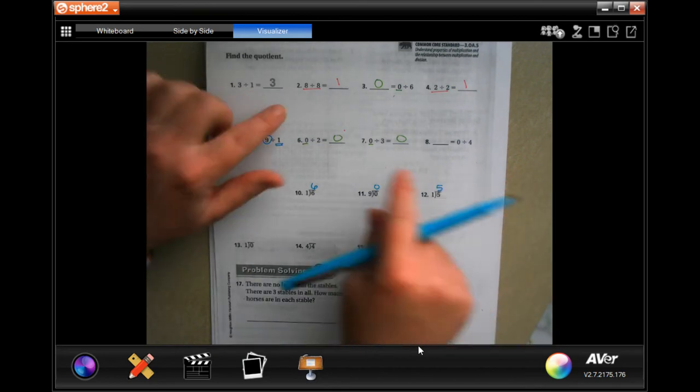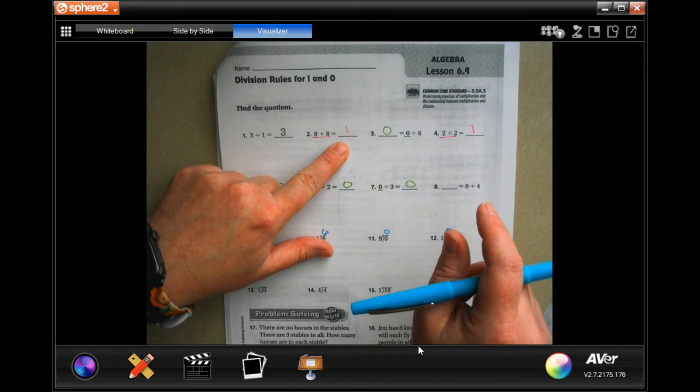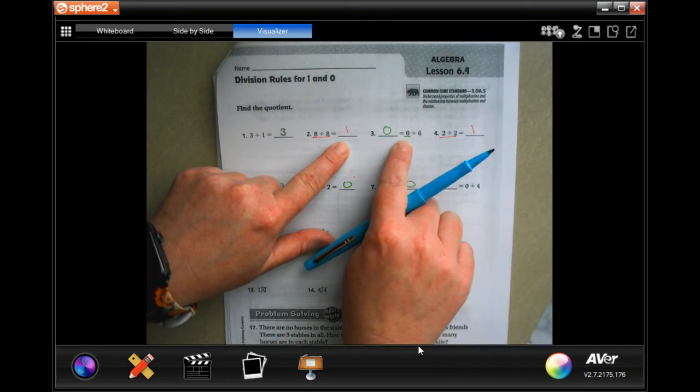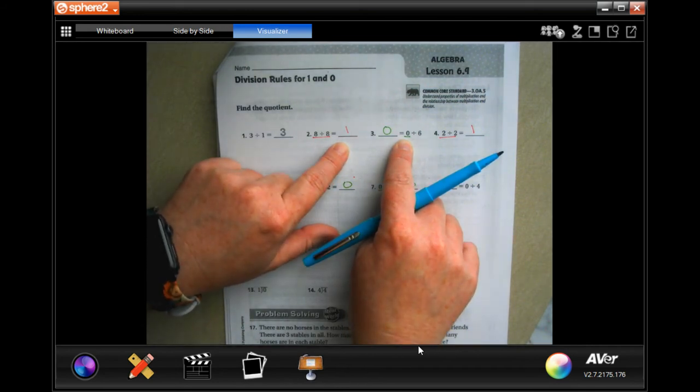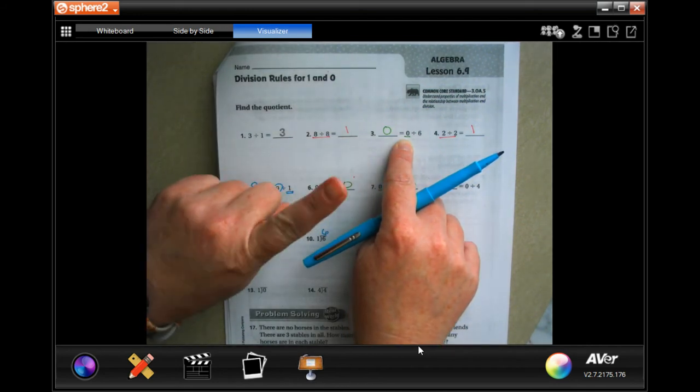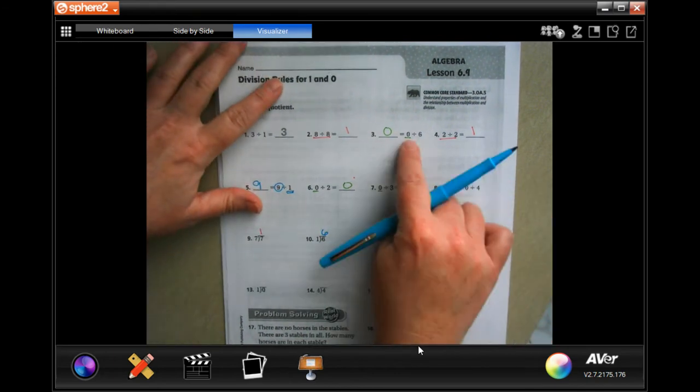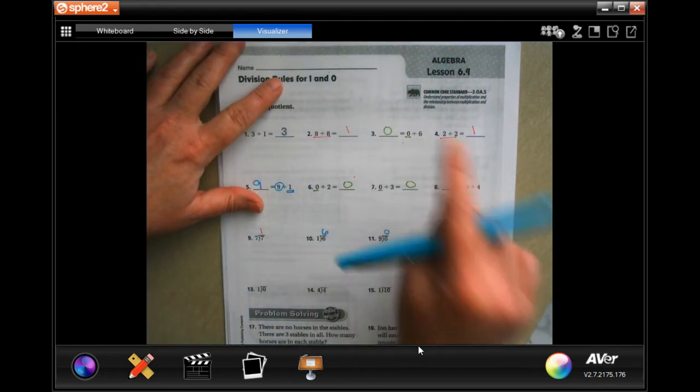Just remember, if the numbers are the same, if they're identical, it's going to be a 1. If there's a 0 anywhere in that problem and it's the only number, if it's a single digit number and a 0, the answer is going to be 0. It doesn't matter which side it's on, it's going to be 0.